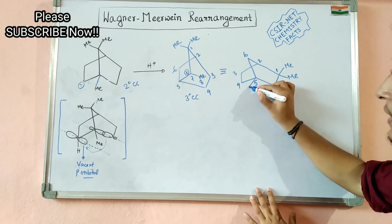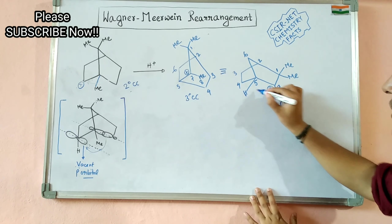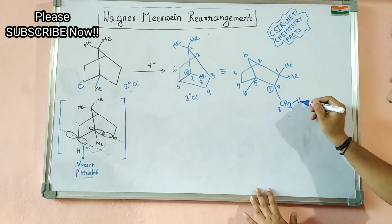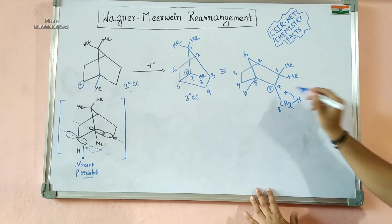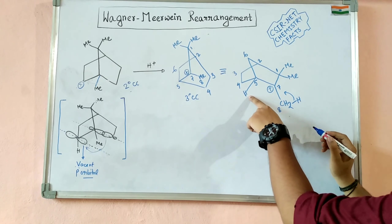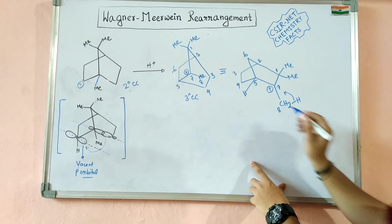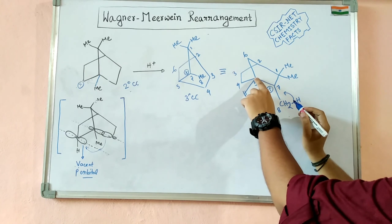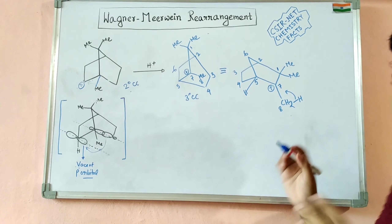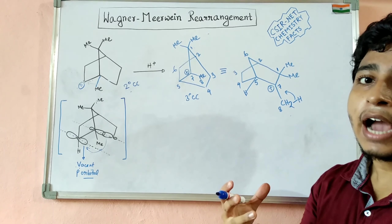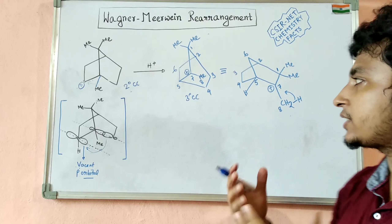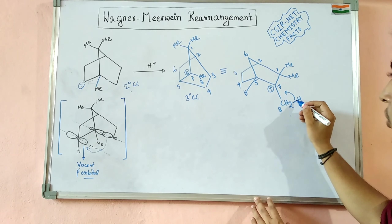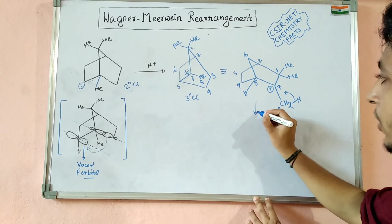To stabilize this carbocation, a proton can be eliminated. However, if one particular proton is eliminated, the double bond would form at a bridge carbon, creating angular strain — a very unstable system. Therefore, that proton cannot be eliminated. Instead, the other proton will be eliminated selectively, placing the double bond away from the bridge carbon.